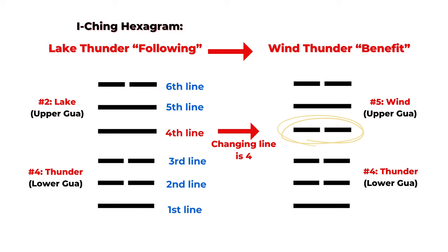This Yi Jing hexagram is called Following, and the changing line is number 4. We always count from the bottom up — the bottom line is the first yao, so the fourth line is the changing line. The original fourth line is a yang line; we change it to a yin line, the broken line. After changing the fourth line, it becomes a new hexagram. The upper gua becomes the wind (number 5), and the lower gua remains the thunder (number 4). So the new Yi Jing hexagram is called Wind Thunder Benefit, and this hexagram represents your future result for the question you're asking. The first, original hexagram is more about the current situation.